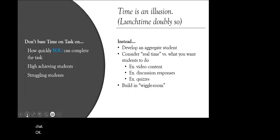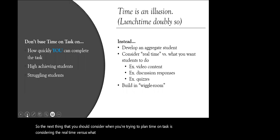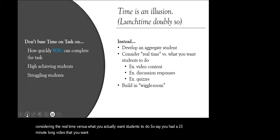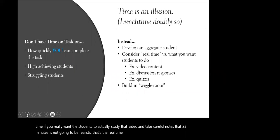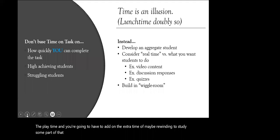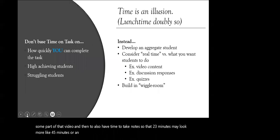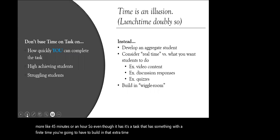The next thing to consider when planning time on task is the real time versus what you actually want students to do. Say you have a 23-minute video you want to assign. While that may seem like a very concrete amount of time, if you really want the students to study that video and take careful notes, those 23 minutes are not realistic — that's just the playtime. You'll have to add on extra time for rewinding to study parts of the video and for taking notes. So that 23 minutes may look more like 45 minutes or an hour. Even tasks with a finite time require building in that extra time to actually complete what you want the students to do.